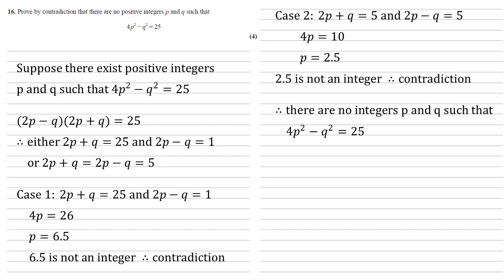Neither of our cases work. Therefore there are no integers p and q such that 4p² - q² = 25.